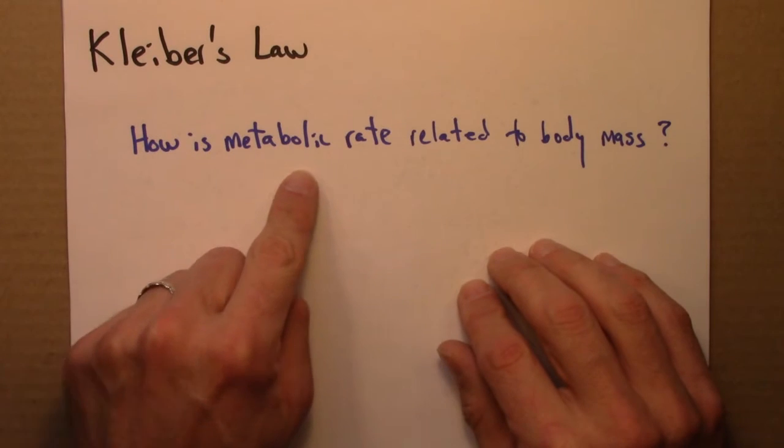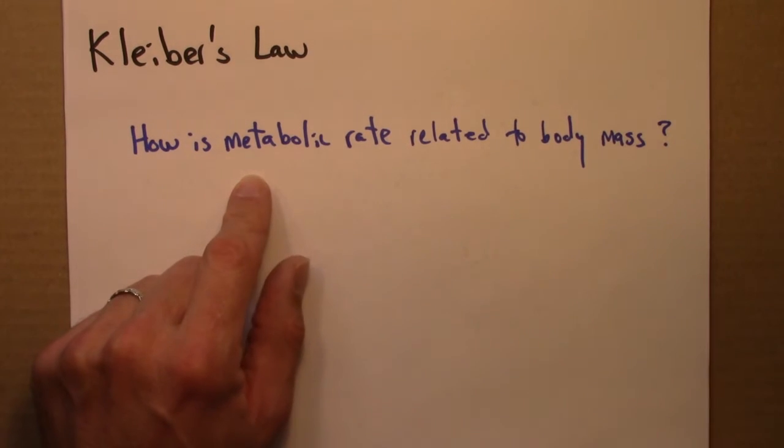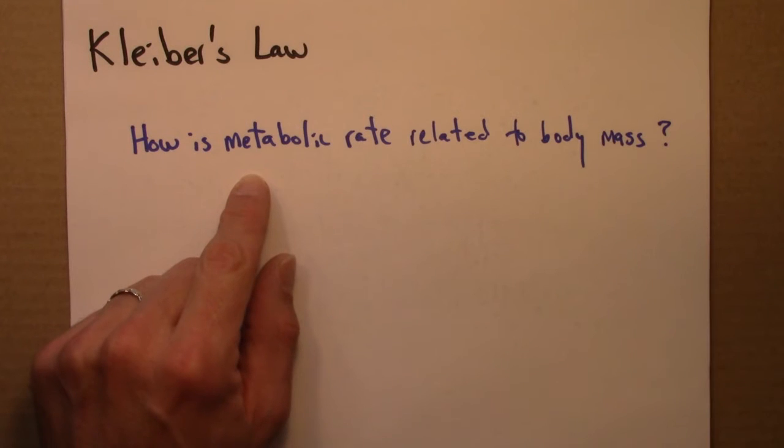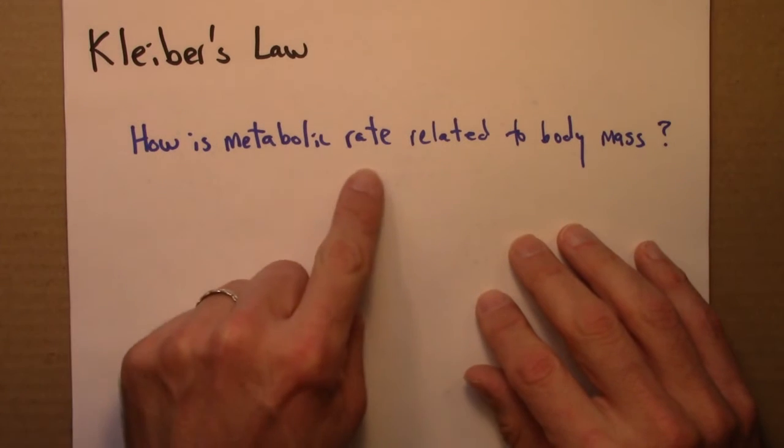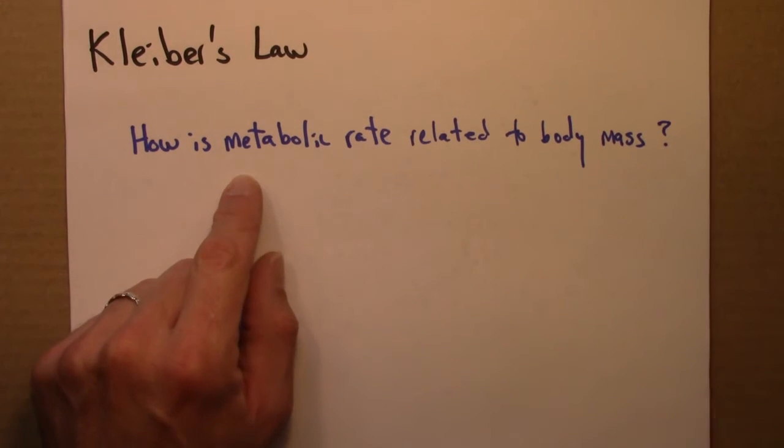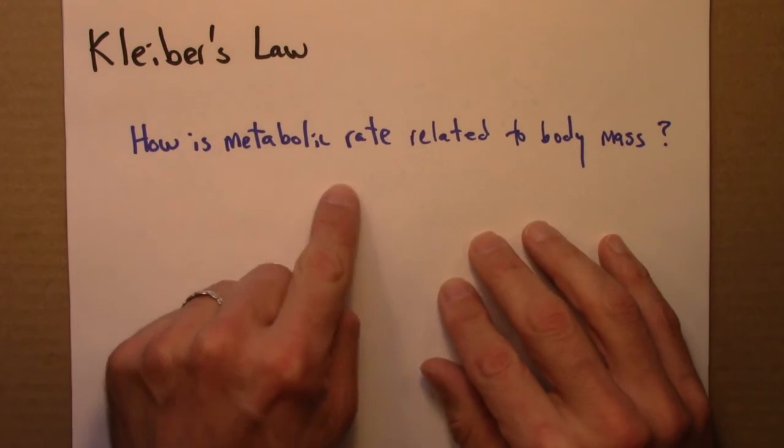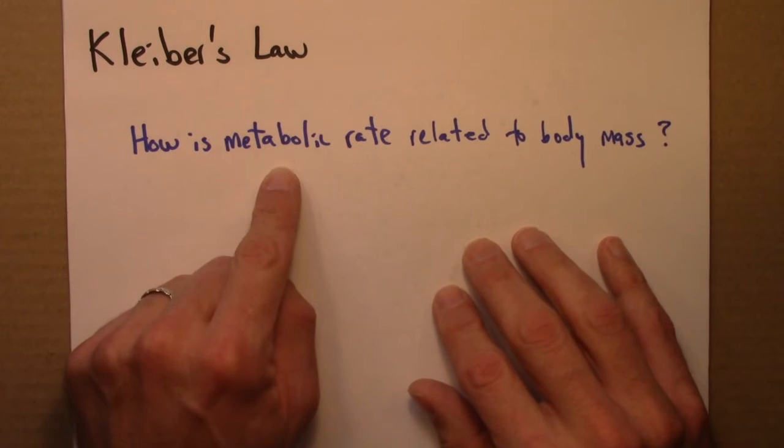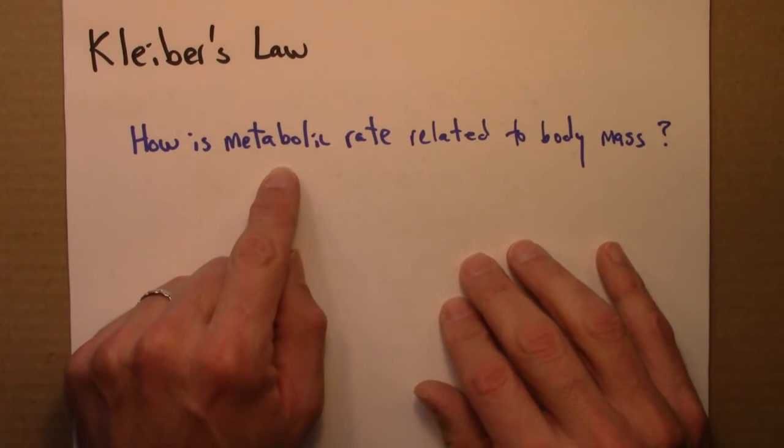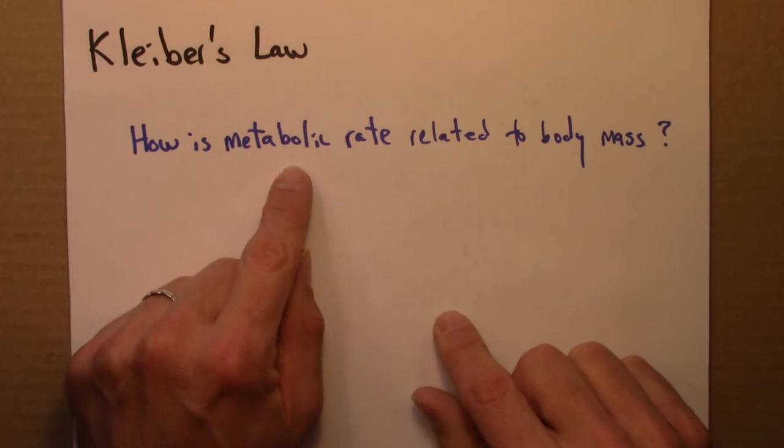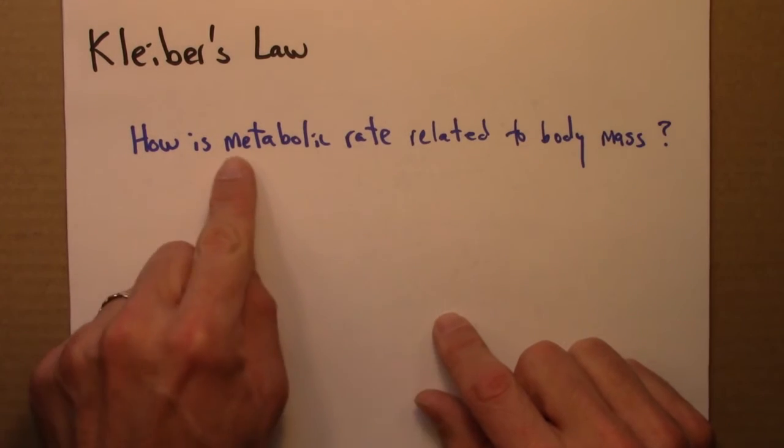Metabolic rate refers to the rate at which an organism consumes resources, food, or equivalently the rate at which it generates heat, because that's where the food that it consumes, that energy, ultimately goes into heat. So metabolic rate could just be how many calories the creature needs to consume in a day, in order to live, in order to carry out its basic life functions.